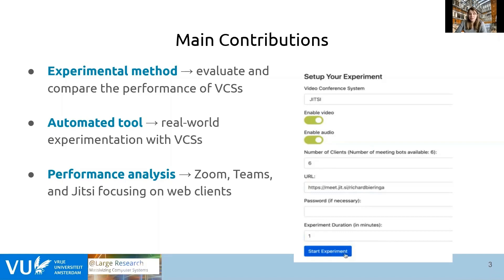Our main contributions are: first, the definition of an experimental method to evaluate and compare the performance of video conferencing systems in the real world. Second, we developed an automated tool that allowed these real-world experiments — a sneak peek of the interface of this automated tool is shown here. Lastly, we conducted a performance analysis using Zoom, Teams, and Jitsi, where we focused on web clients.